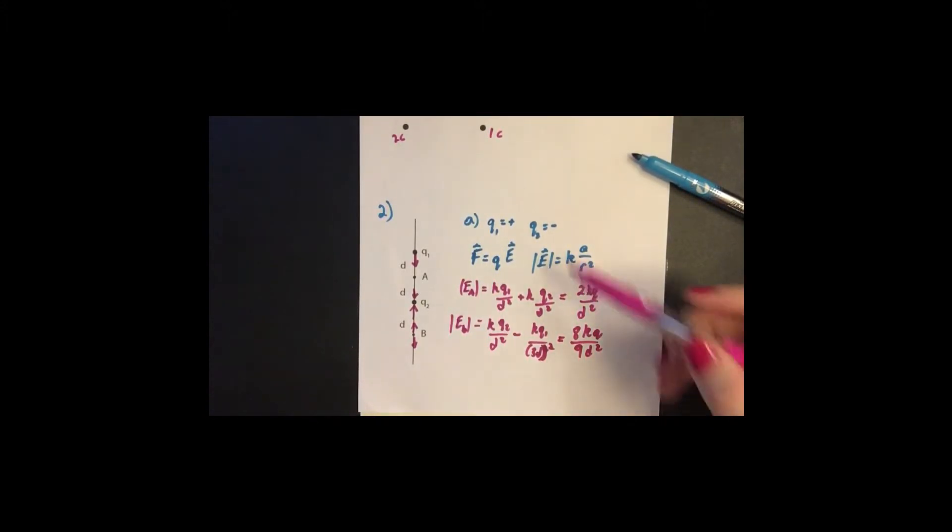Okay, so if we look at how we measure the force, we just take the magnitude, we just take the electric field and multiply it by our test charge to get the magnitude of the force, or to get the force. So if we look at the magnitude, 2KQ over D squared is bigger than 8KQ over 9D squared.